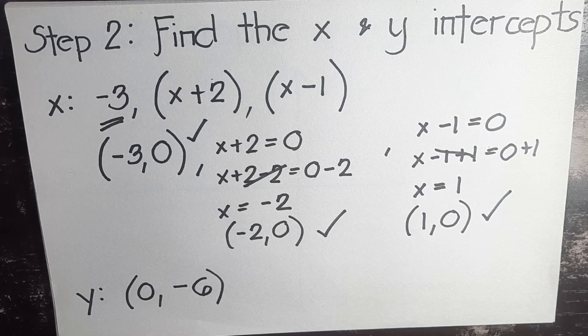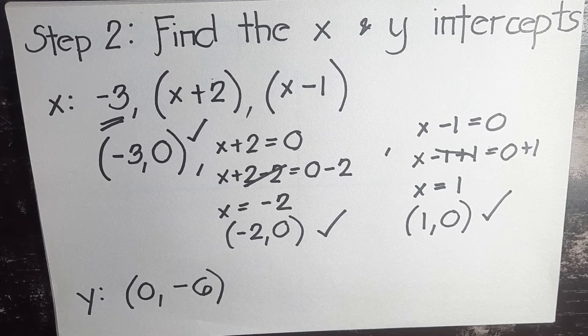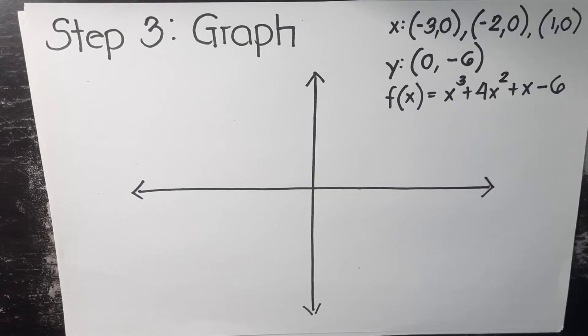We are on the last part of this process, which is the graphing. We already have our three x-intercepts based from the factors. We already have our y-intercept, and of course the given polynomial earlier, which we will be using later. Let's plot first all of our x-intercepts.